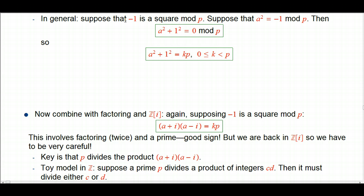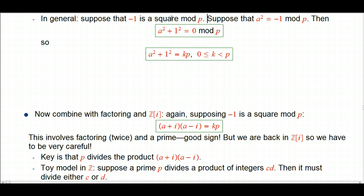Here's the situation we're in with the sum of squares problem. Suppose that minus 1 is a square mod p — which happens exactly when p is congruent to 1 mod 4. Pick some a such that a squared is congruent to minus 1 mod p. Then a squared plus 1 squared is congruent to 0 mod p. So we've got a way to represent some multiple of p as a sum of squares — in fact a rather special one where one of them is 1. But we don't yet know we can remove that factor of k.